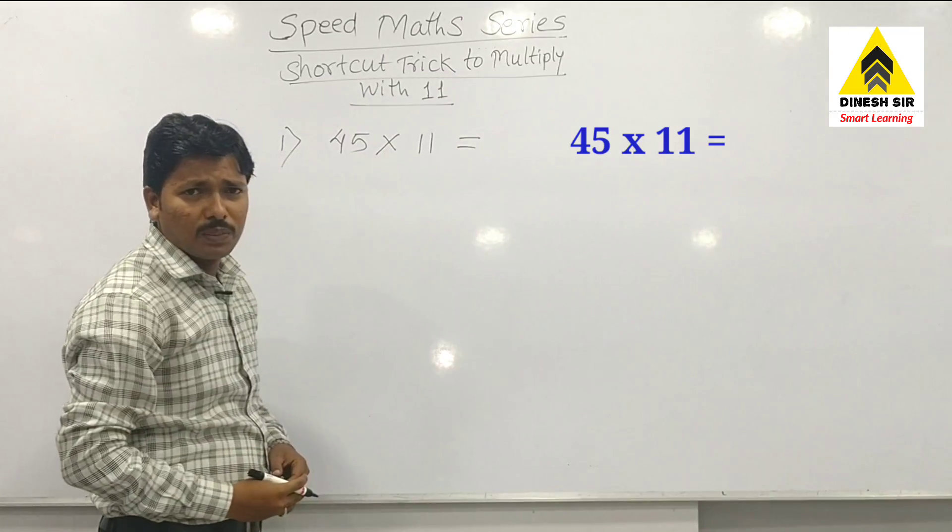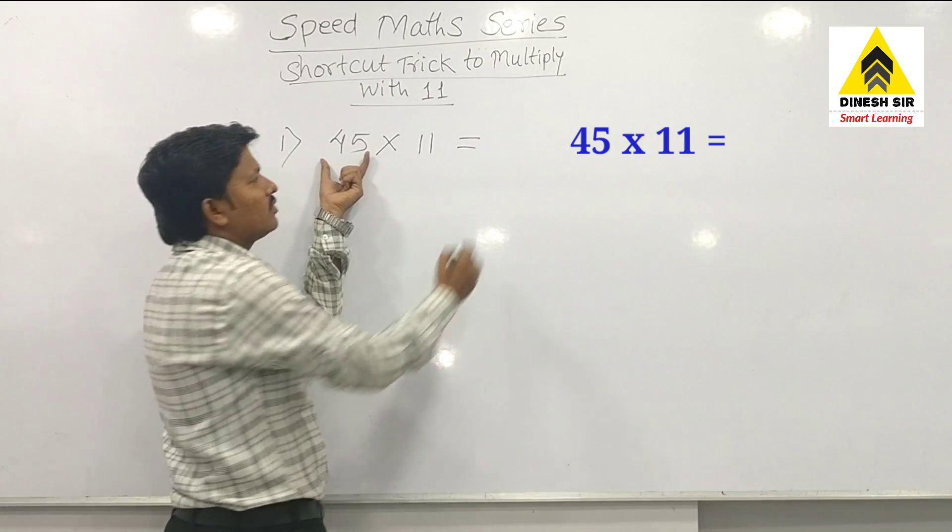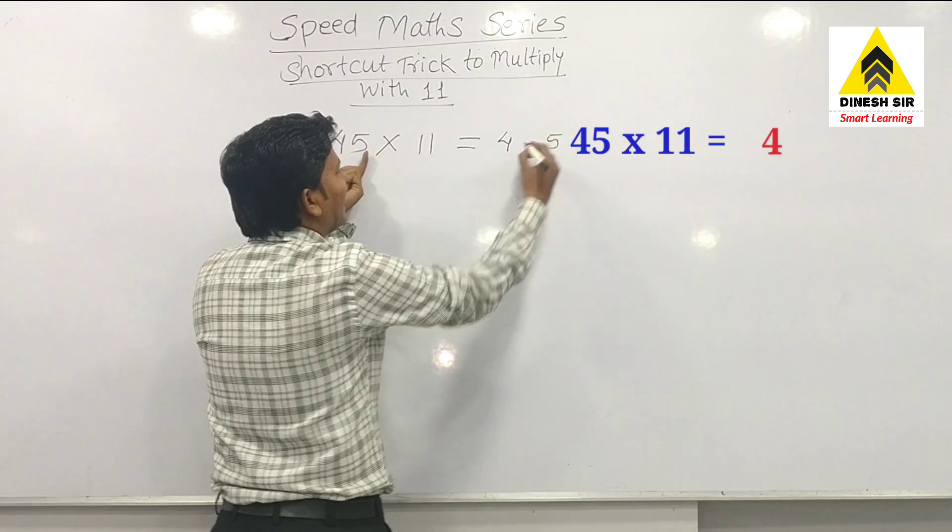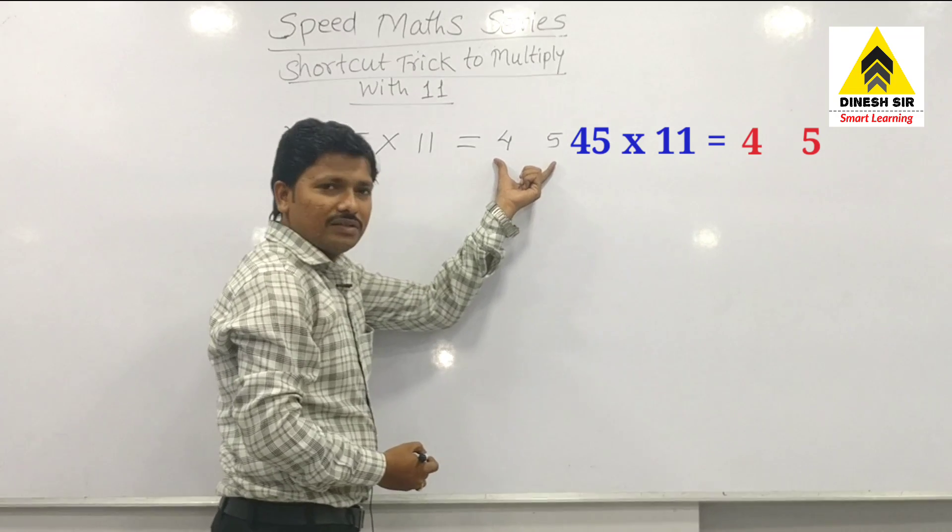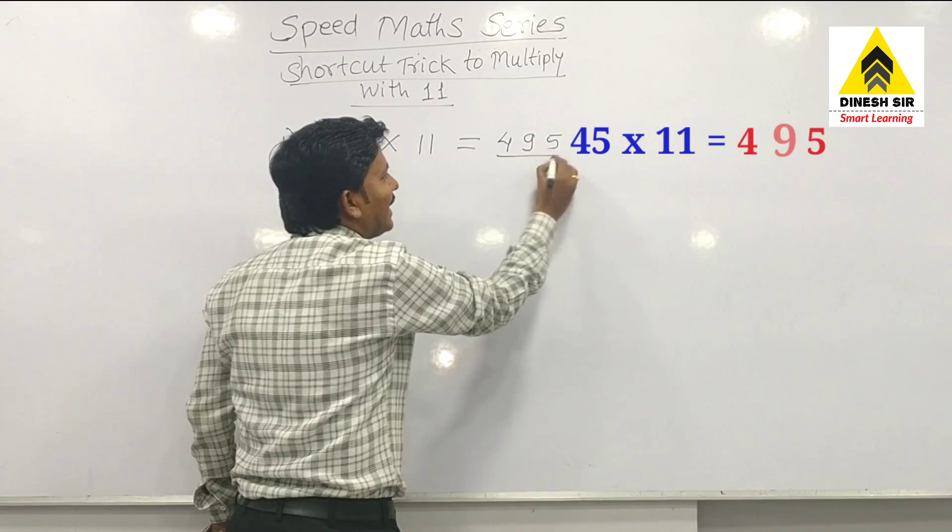It's a very simple trick. Here you have to write 4 and 5 as it is with a gap. Now add these two numbers: 4 plus 5, that is 9. Write that in the middle. You got the answer.